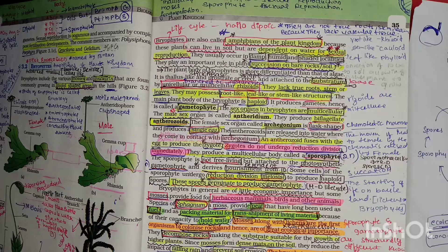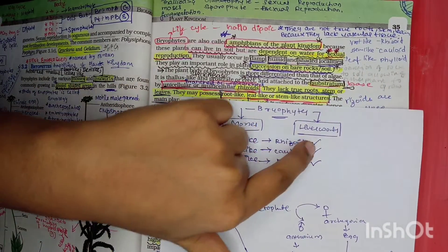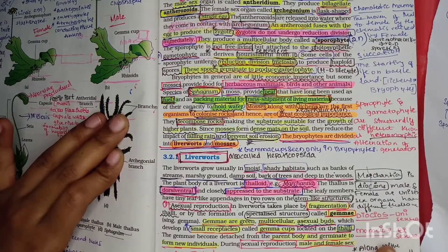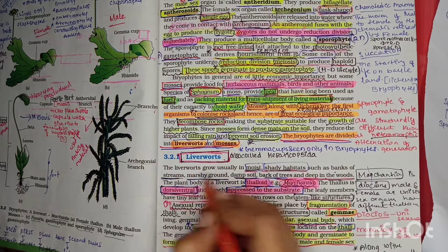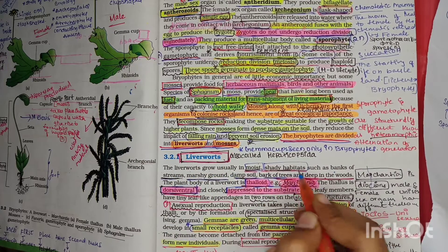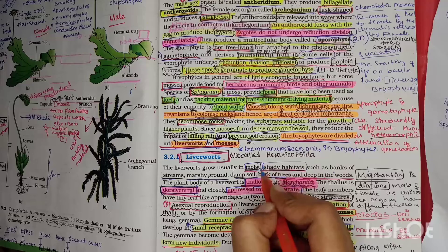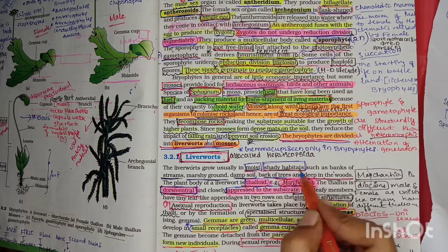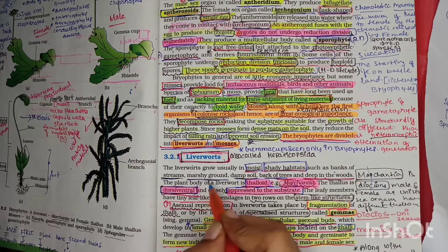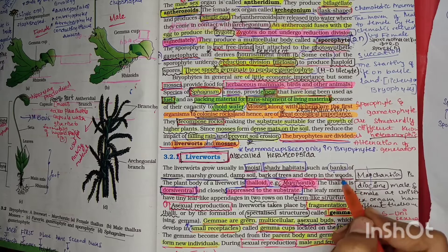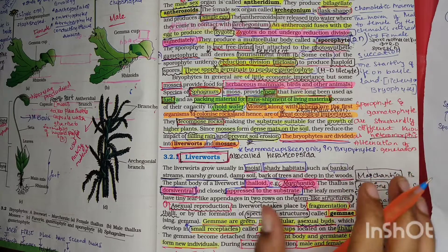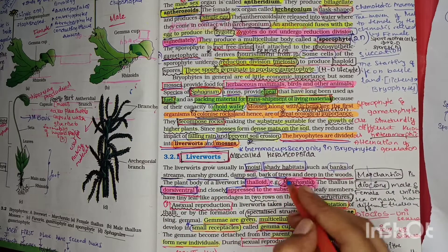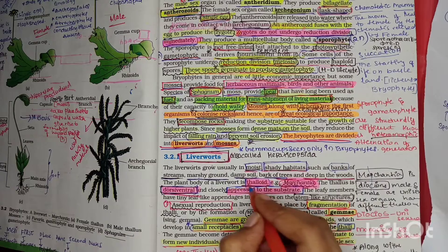Bryophytes are divided into liverworts and mosses. Liverworts grow usually in moist shady habitats - wet regions where sunlight concentration is less. Liverworts usually grow in moist and shady locations such as banks of streams, marshy grounds, damp soils, bark of trees, and deep in the woods. The plant body of liverworts is thalloid.